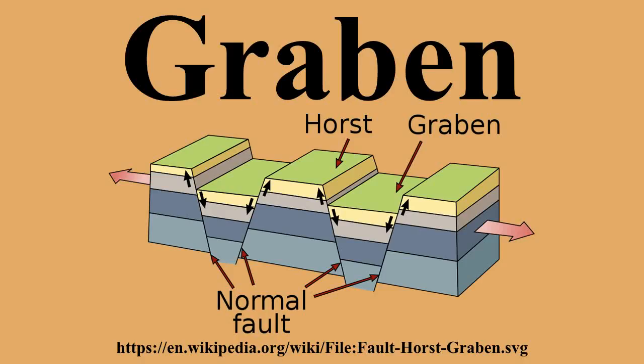In geology, a Graben is a depressed block of land bordered by parallel faults. Graben is German for ditch or trench. The plural form is either Graben or Grabens. A Graben is a valley with a distinct escarpment on each side, caused by the displacement of a block of land downward.